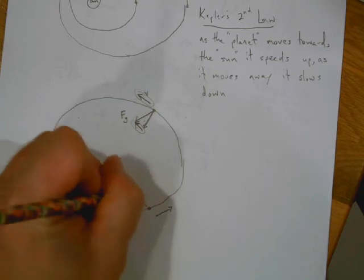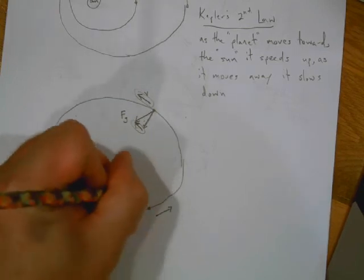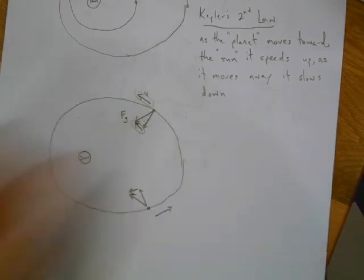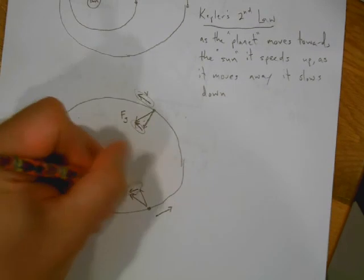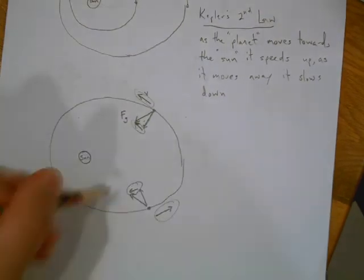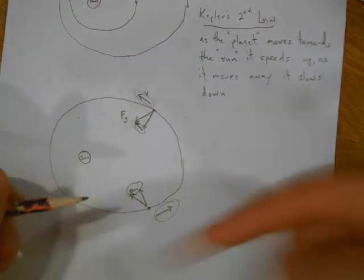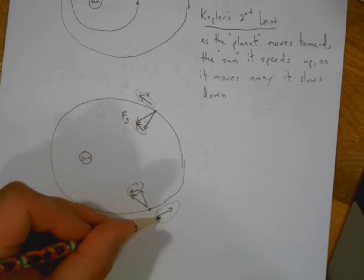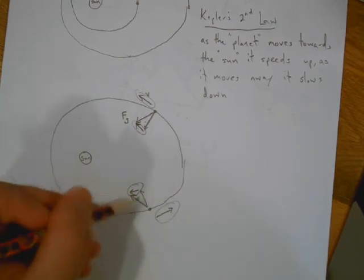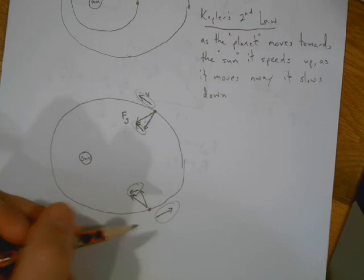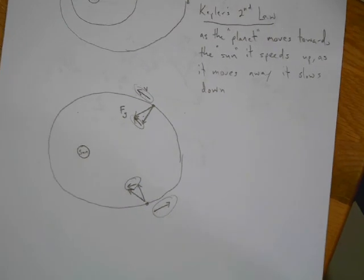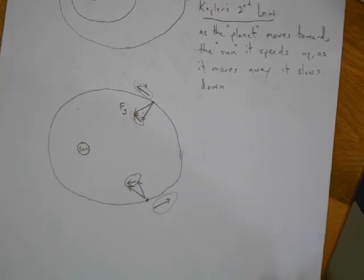My force of gravity over here would be smaller because it's farther away. Well, I guess it's about the same distance away. But if it was farther away, it would be smaller. But if I break that into its components, do you see, hey, this and this - it's accelerating that way. It's moving this way. That's going to cause it to slow down. And then this component would cause it to change direction. So hopefully that makes sense.